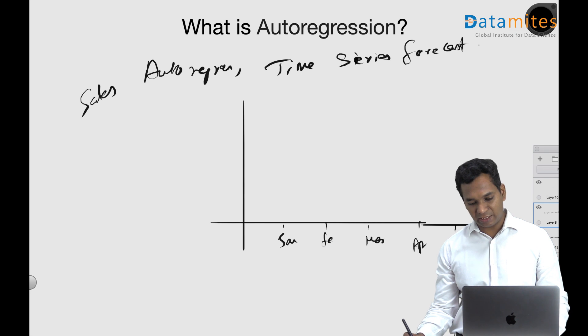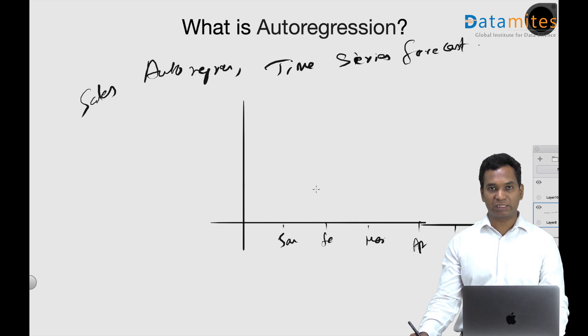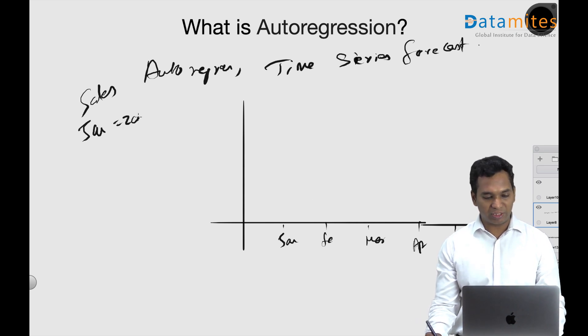And we have sales of these cars - on January, February. Let's say January we have sold 200 cars, February we sold 250 cars, and March we have sold let's say 220 cars.